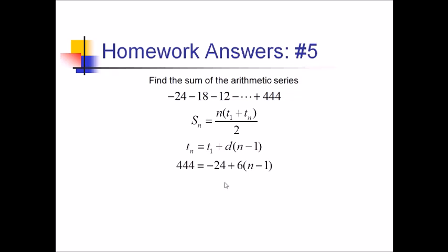Doing a little bit of algebra now. I'm going to add 24 over there. So that's 468. And I'll distribute the 6 over here to have 6n minus 6. Adding the 6, we've got 474. And dividing by 6,